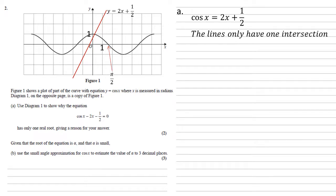We can see now that the lines have only got one intersection. They only cross once, therefore there's only one real root.